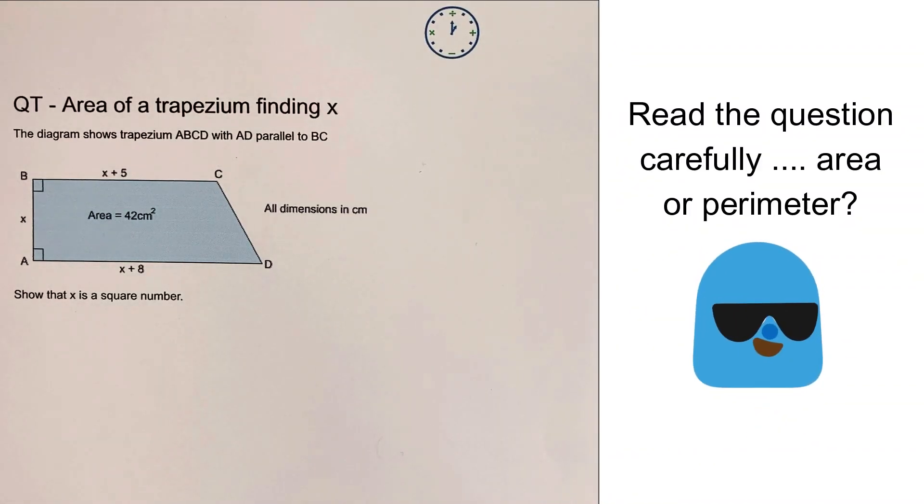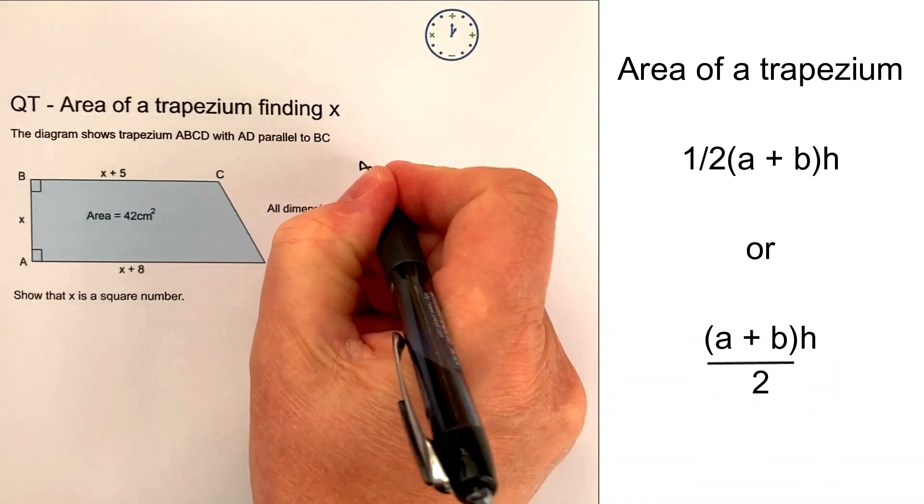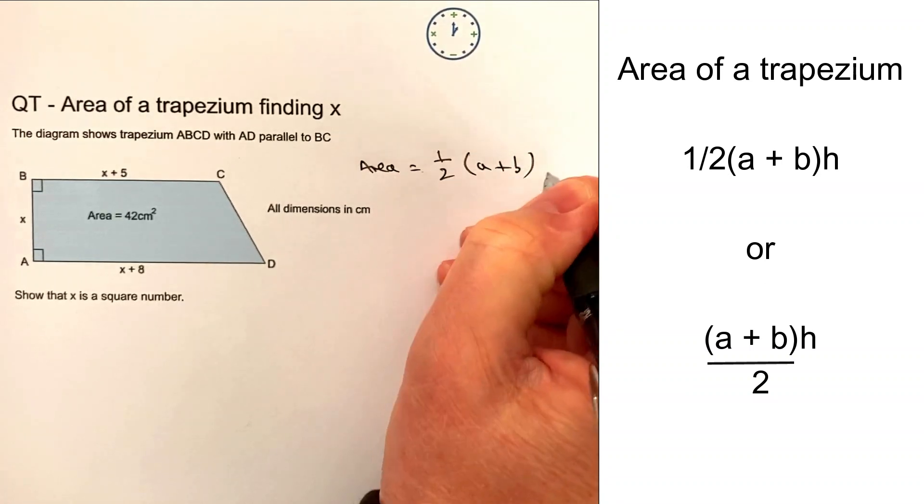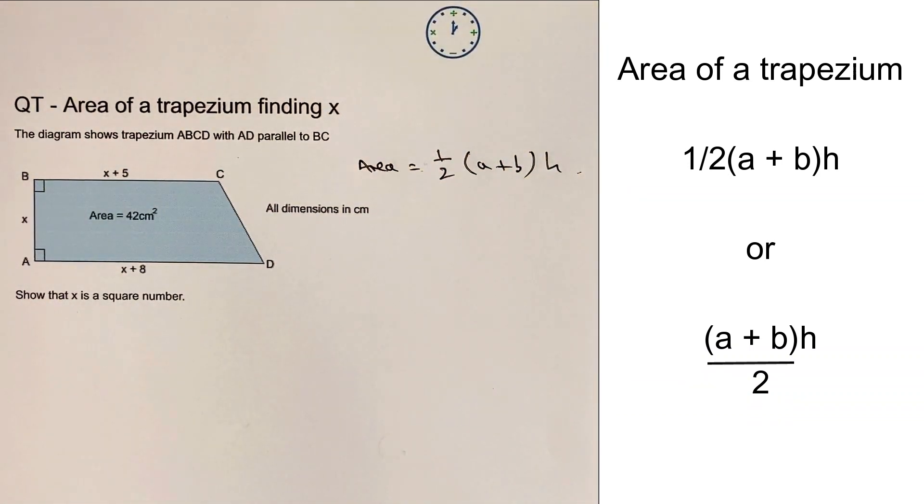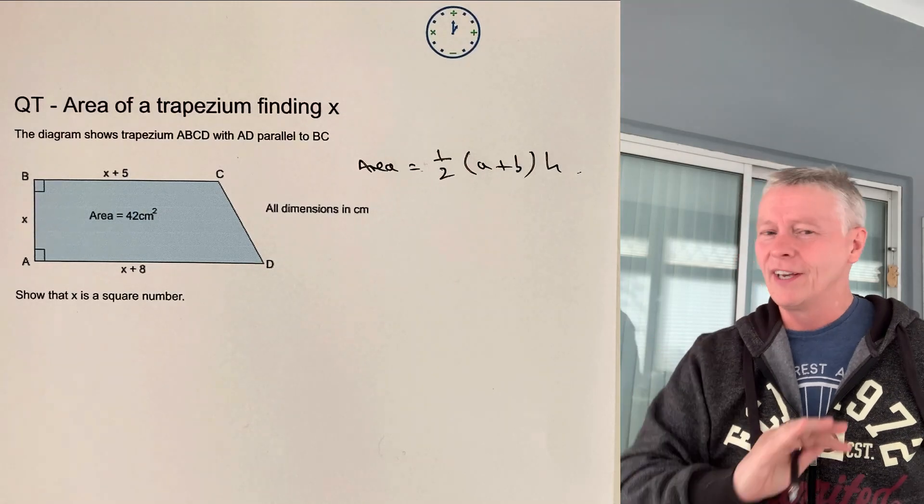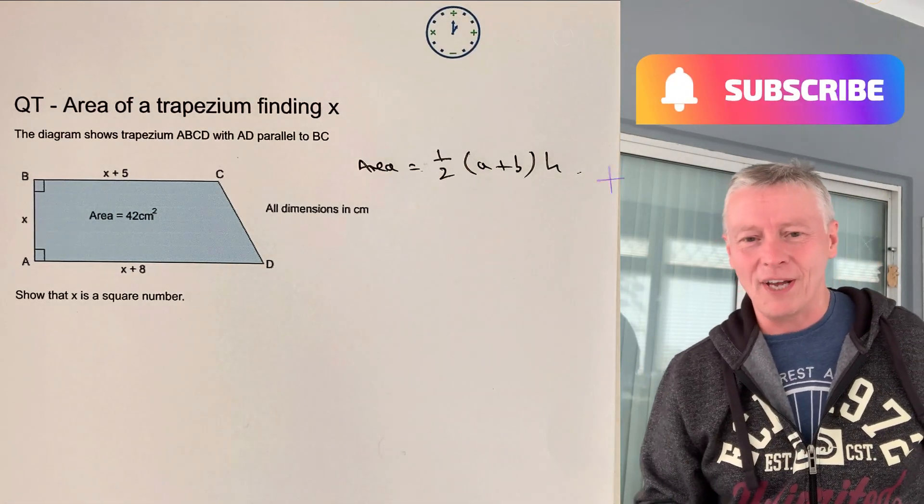Okay, so the first part of it is I would always write down the area. So the area of a trapezium equals, now in my particular case I write it as a half a plus b times h. Now I'm very aware that some students might write a plus b over 2, it's exactly the same, really doesn't matter.